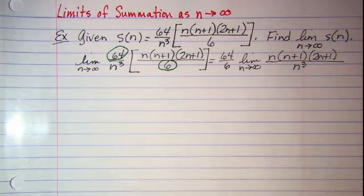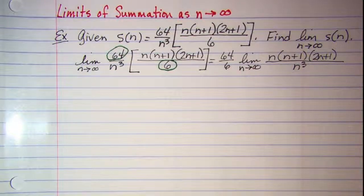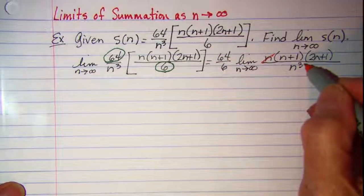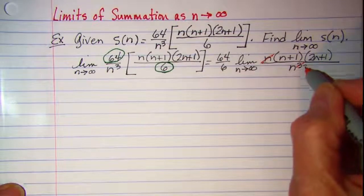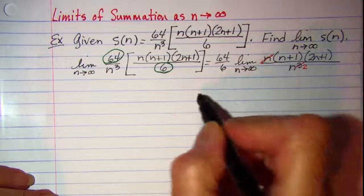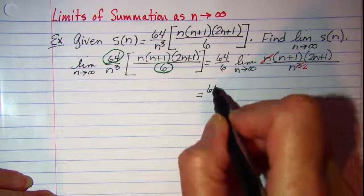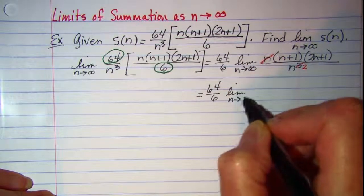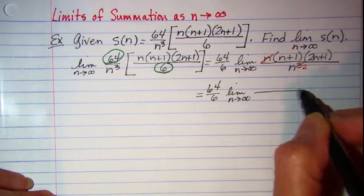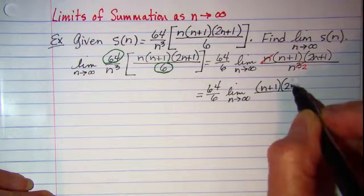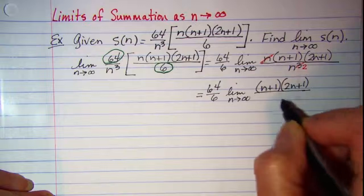Now we can simplify this a little bit. This factor of n in the numerator can be canceled with one of these factors and that would give me an n squared in the denominator. So this is 64 over 6 times the limit as n approaches infinity of n plus 1 times 2n plus 1 over n squared.